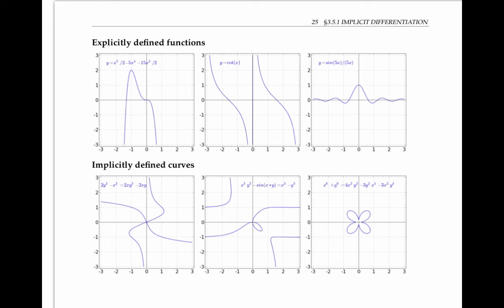In fact, they can not only violate the vertical line test, but they can cross themselves or be broken up into several pieces, or look like really cool pictures like this flower. But small pieces of these curves do satisfy the vertical line test. For small pieces, y is a function of x, and that allows us to use our calculus techniques, especially the chain rule, to compute derivatives for these implicitly defined curves.